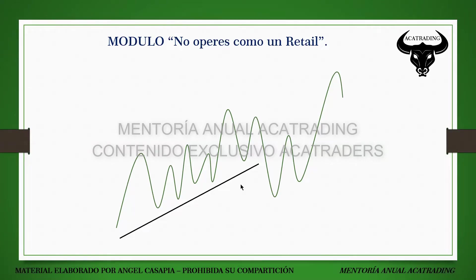Cuando se neutralizan mínimos, el precio tiende a formar un order block, y esto lo convierte en un order block relevante porque contiene una cantidad inimaginable de liquidez en ventas y una cantidad importante de liquidez en stop loss, porque traders en compra que han ido operando esa línea de tendencia han colocado sus stop loss por debajo de los mínimos. Por lo general, estos movimientos de ruptura se generan como vacíos de liquidez, son movimientos muy fuertes que podemos aprovechar.